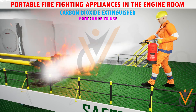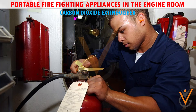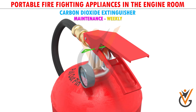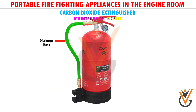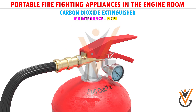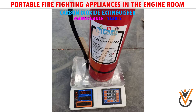Maintenance — weekly check: check the nozzle, check safety pin is in position, check exterior for cracks or any damage and clean it, check that labels are in place. Also check the operating lever and weigh the cylinder.